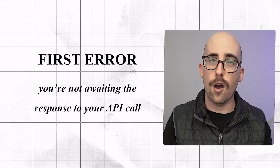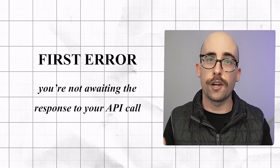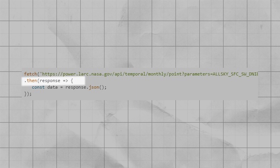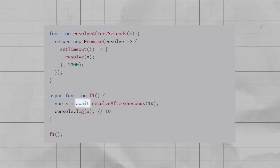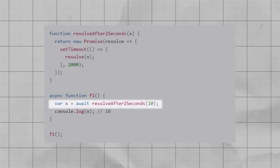The first reason is that you're probably not awaiting the response to your API call. There are a couple of ways to do this. The old-fashioned way is with a .then — you await the resolution of the promise and then in your .then you assign the response to your variable. Or you can use the more modern async/await approach: declare your function as async and put the await keyword in front of the API call, so the code reads synchronously even though asynchronous things are happening. If you're getting this error, you're probably missing that await keyword or the .then.